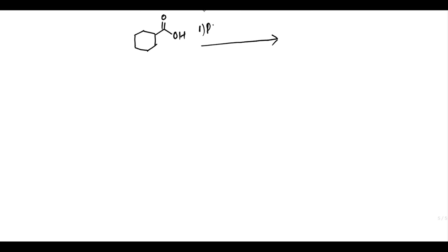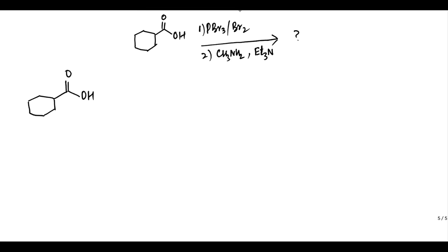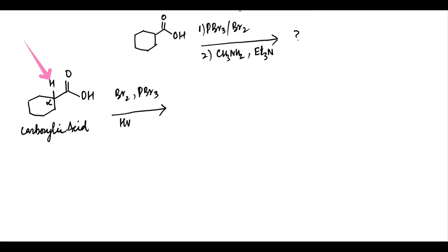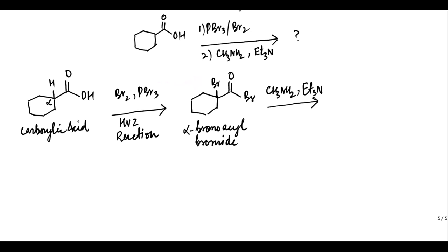Let us find the product formed by subjecting this carboxylic acid to bromination in the presence of PBr3, followed by reaction with methylamine under basic conditions. This carboxylic acid has alpha-hydrogens; therefore treatment with Br2 in the presence of PBr3 leads to an HVZ reaction. This forms alpha-bromoacyl bromide, which on treatment with methylamine in the presence of triethylamine converts the halide into an amide derivative.